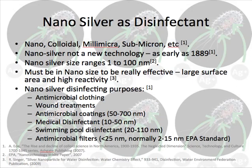Nanosilver is also known by many names — among others, colloidal, millimicra, and submicron silver. Nanosilver is not a new technology; it was first discovered in 1889. The most important property, of course, is the nanosize particles, which ranges from 1 to 100 nanometers. As a disinfectant, it must be in nanosize to be really effective. That way, nanosilver will have a large surface area and high reactivity towards microbes.